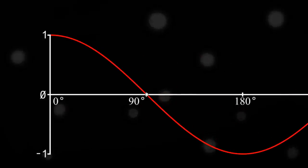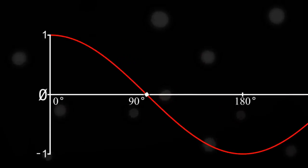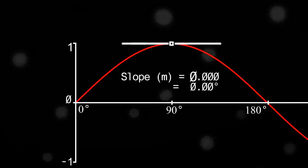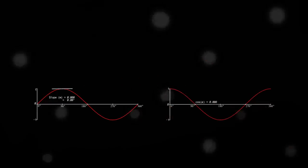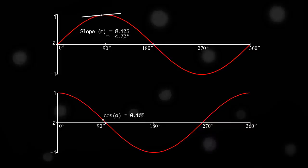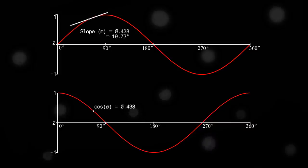If we examine the cosine function at 90 degrees, we see that the value of x on the vertical axis is 0. If we examine the sine function at 90 degrees, we see that the value of slope m is also 0. Comparing these two functions side by side, we observe a continuous correlation between the value of cosine theta and the value of the derivative, or slope m, of sine theta.